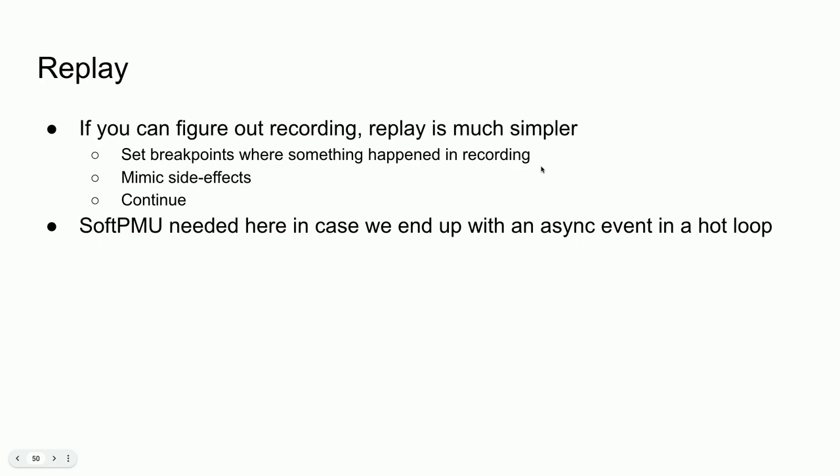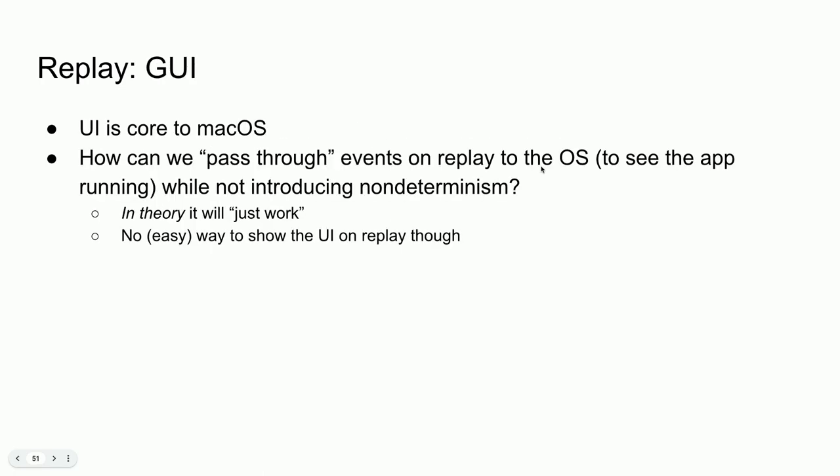That will get us about 95% of the way there. From our testing, the counters are normally about plus or minus one percent per iteration. One last point we're going to get asked about: what about UI? How do you deal with graphical programs, given that macOS is so heavily graphical?